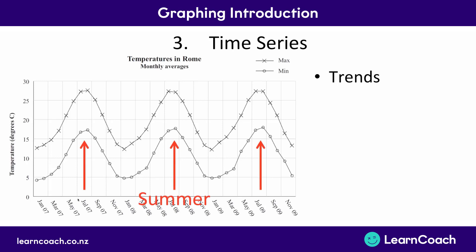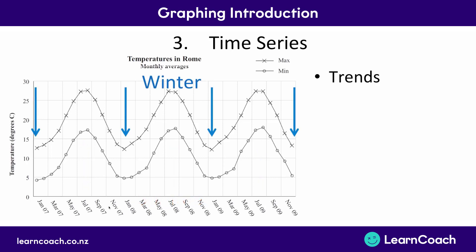You can see it's summer in July in Rome, so you get hotter temperatures, and it's winter around November to January, which is why it's colder in those months. So you're going to look for seasonal trends in these time series graphs, not general upward or downward trends.